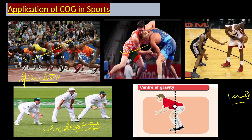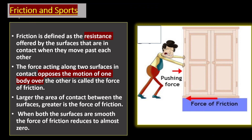In boxing, boxers also keep their center of gravity low and bend their legs so opponents cannot easily defeat them. We can see this application in basketball and cricket as well.